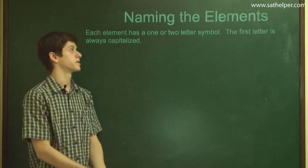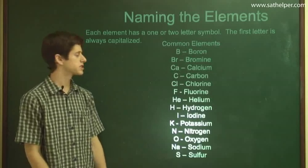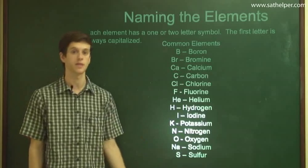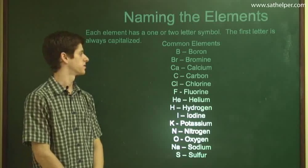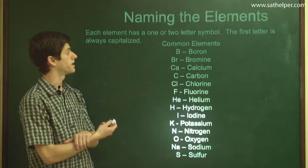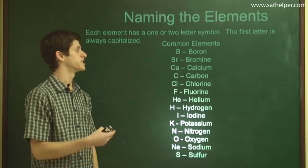Every element has a one or two letter symbol. The first letter is always capitalized. Here's a list of some of the most common elements that you're going to come in contact with. Most of them are found in the top three or four rows of the periodic table. Here they are, right? Boron, its symbol is B, just a capital B, whereas bromine's symbol is BR.